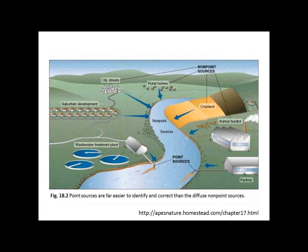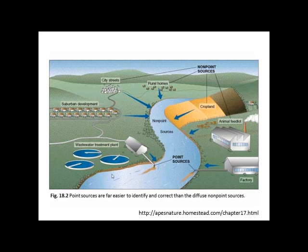From a single contaminant perspective we can start drawing conclusions: expose at a certain concentration and get a particular response. But the environment is rarely that simple — it's very rare to find a single contaminant acting on organisms. Contaminants come from many sources: agricultural runoff, rural homes, and construction as non-point sources, and wastewater treatment plants and factories as point sources. Point sources are far easier to identify than the diffuse sources.